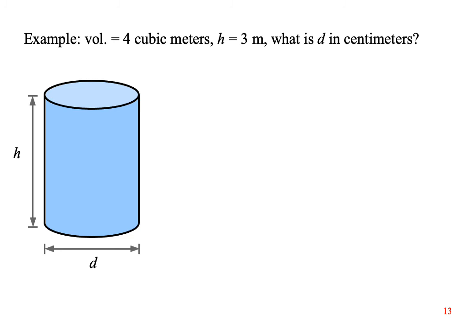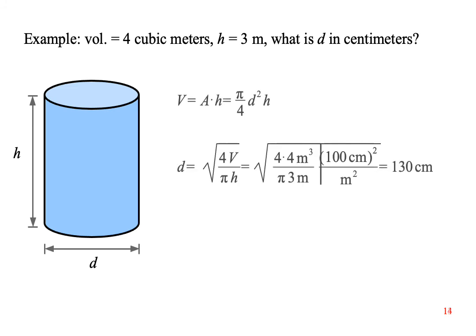Here's a practical design problem. You need a cylindrical tank with a volume of 4 cubic meters, and the ceiling limits the height of the tank to 3 meters. What diameter do you need to make it? Stop the video, solve the problem, then start it up again to see how your answer compares. As long as the cross section is uniform, the volume of a cylinder is the cross sectional area times the height, regardless of whether the cross sectional area is a circle, a square, or some other shape. In this case, it's a circle. Solve the volume equation algebraically for diameter. Then introduce numbers and units. Then enter the unit conversion to get an answer of 130 centimeters.